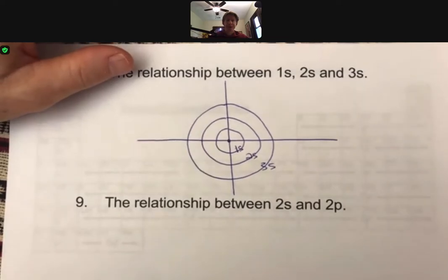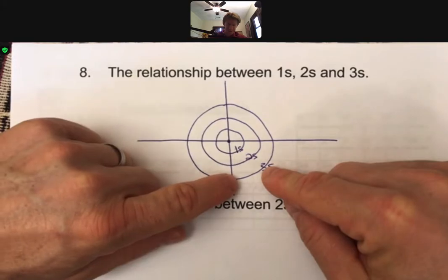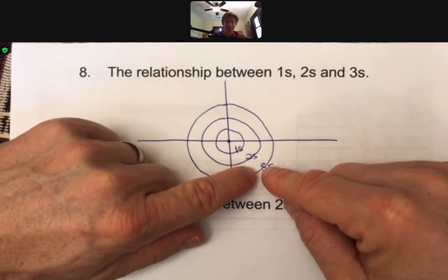The 2s also has the 2p in it, and the 3s also has the 3p and the 3d sub-levels in it as well.